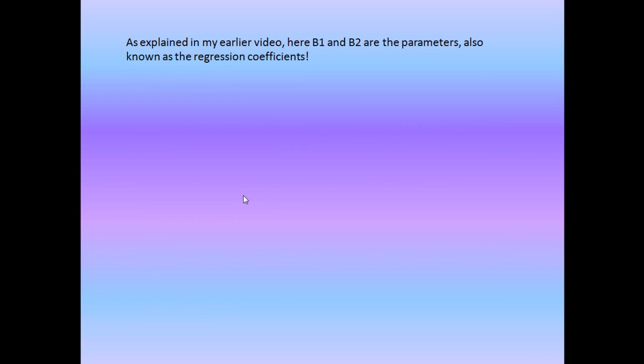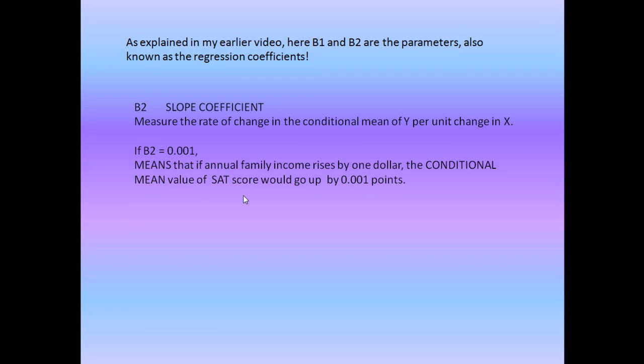As explained in my earlier video, here b1 and b2 are the parameters, also known as the regression coefficients. I will just review the concept once. b2 is the slope coefficient which measures the rate of change in the conditional mean of y per unit change in x. So if b2 equals 0.001, it means that if the annual family income rises by 1 dollar, the conditional mean value of SAT score would go up by 0.001 points. b1 is the intercept coefficient. It gives the mean value of y if x equals 0.